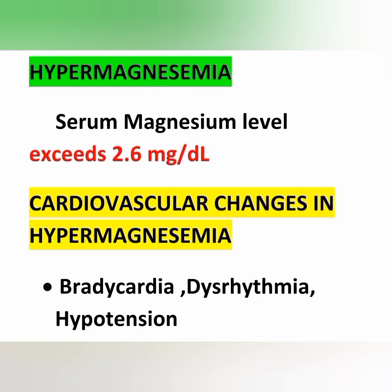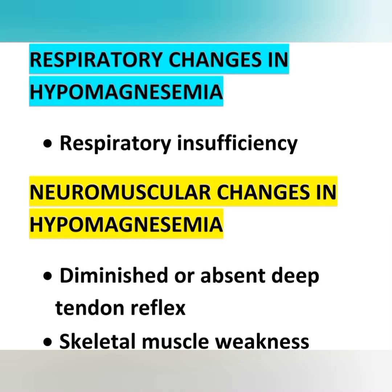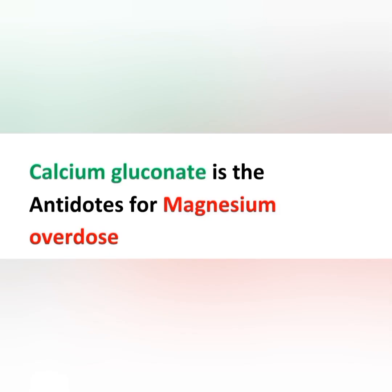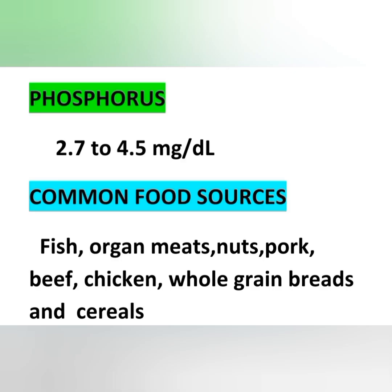Hypermagnesemia means serum magnesium level exceeds 2.6 milligrams per deciliter. Cardiovascular changes include bradycardia, dysrhythmia, and hypotension. Respiratory changes include respiratory insufficiency. Neuromuscular changes include diminished or absent deep tendon reflexes and skeletal muscle weakness. An important point: calcium gluconate is the antidote for magnesium overdose.